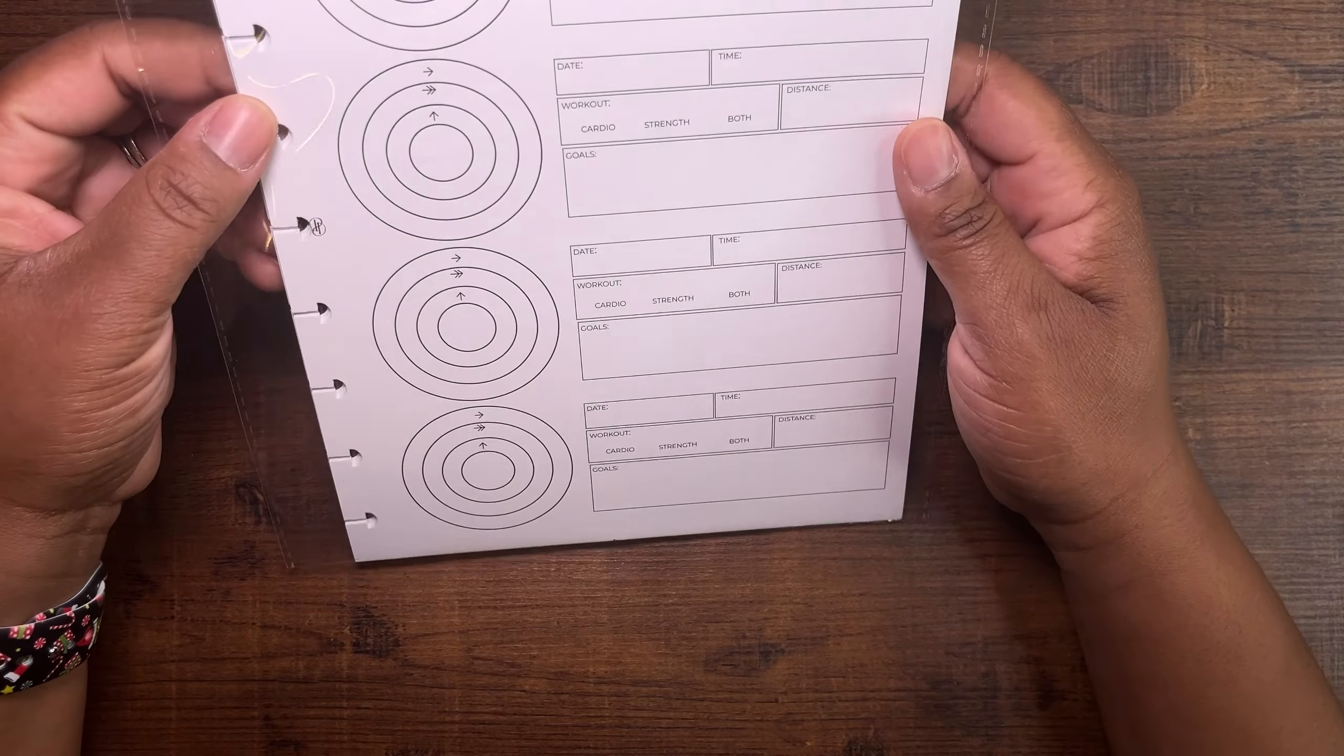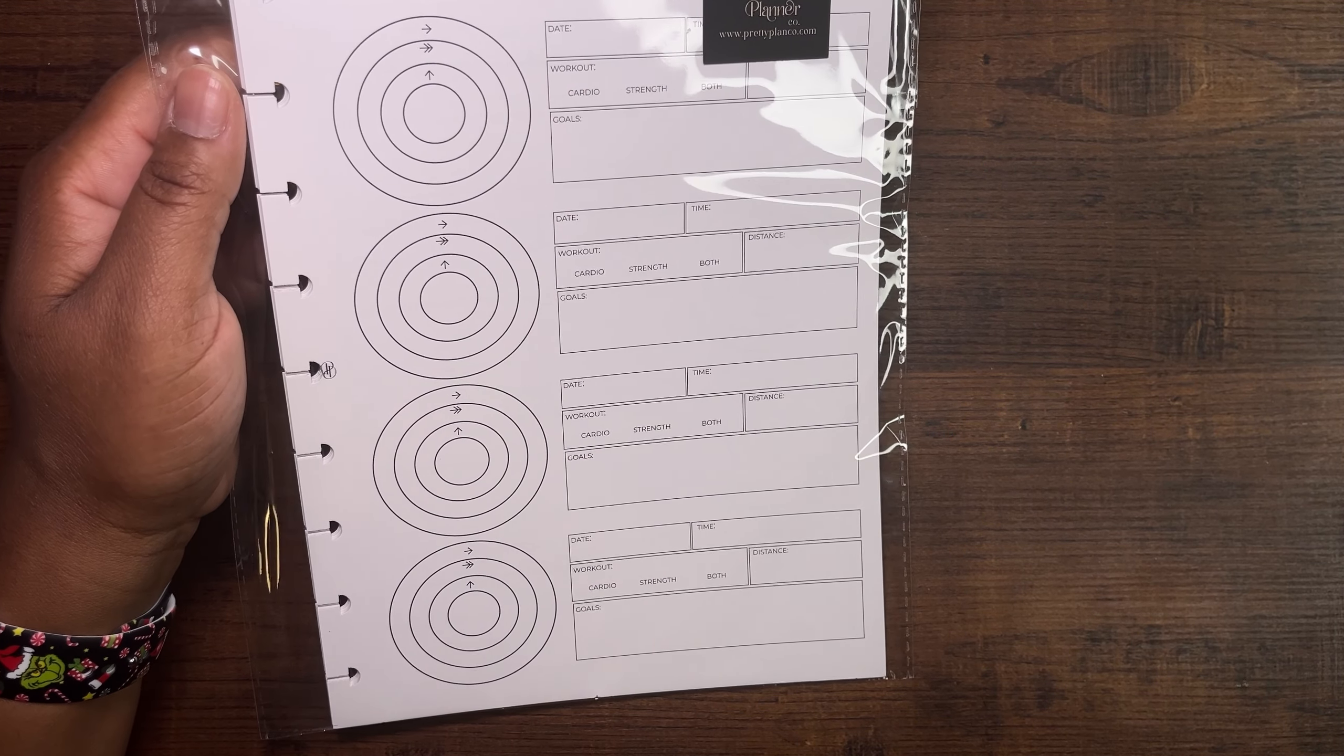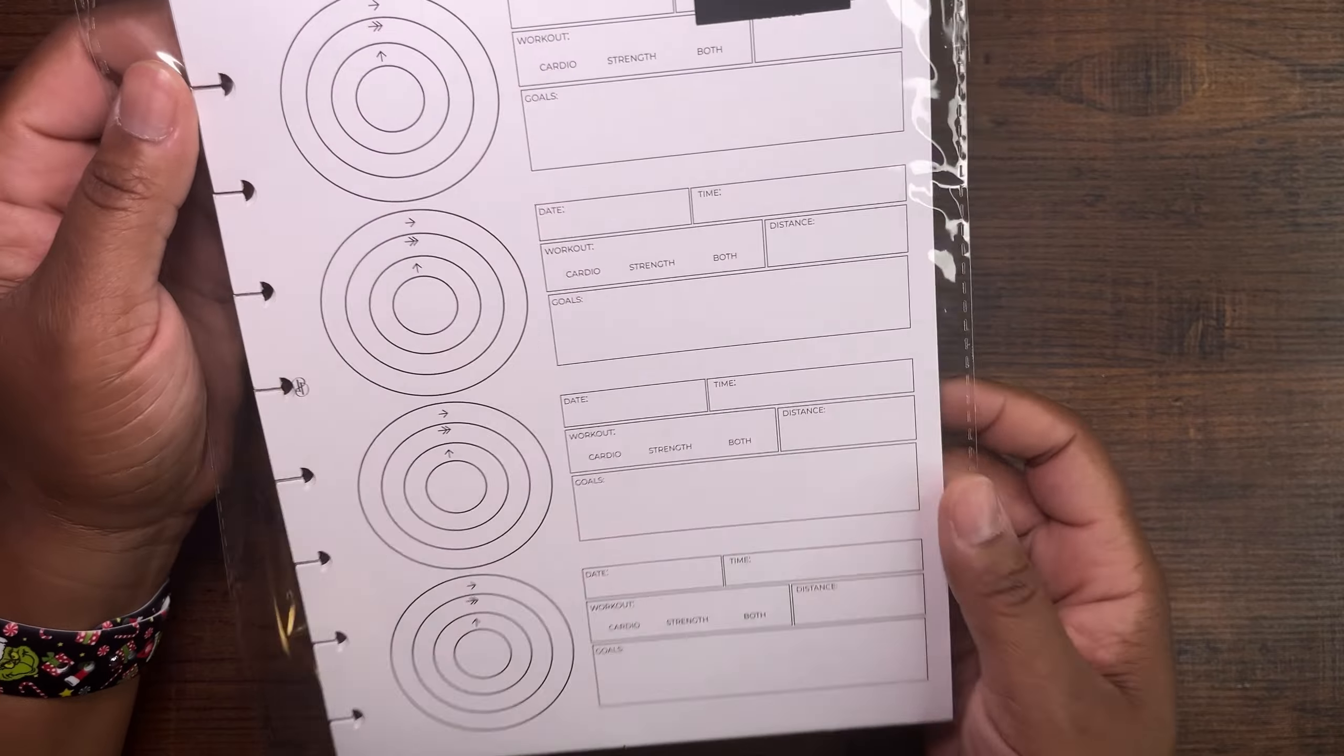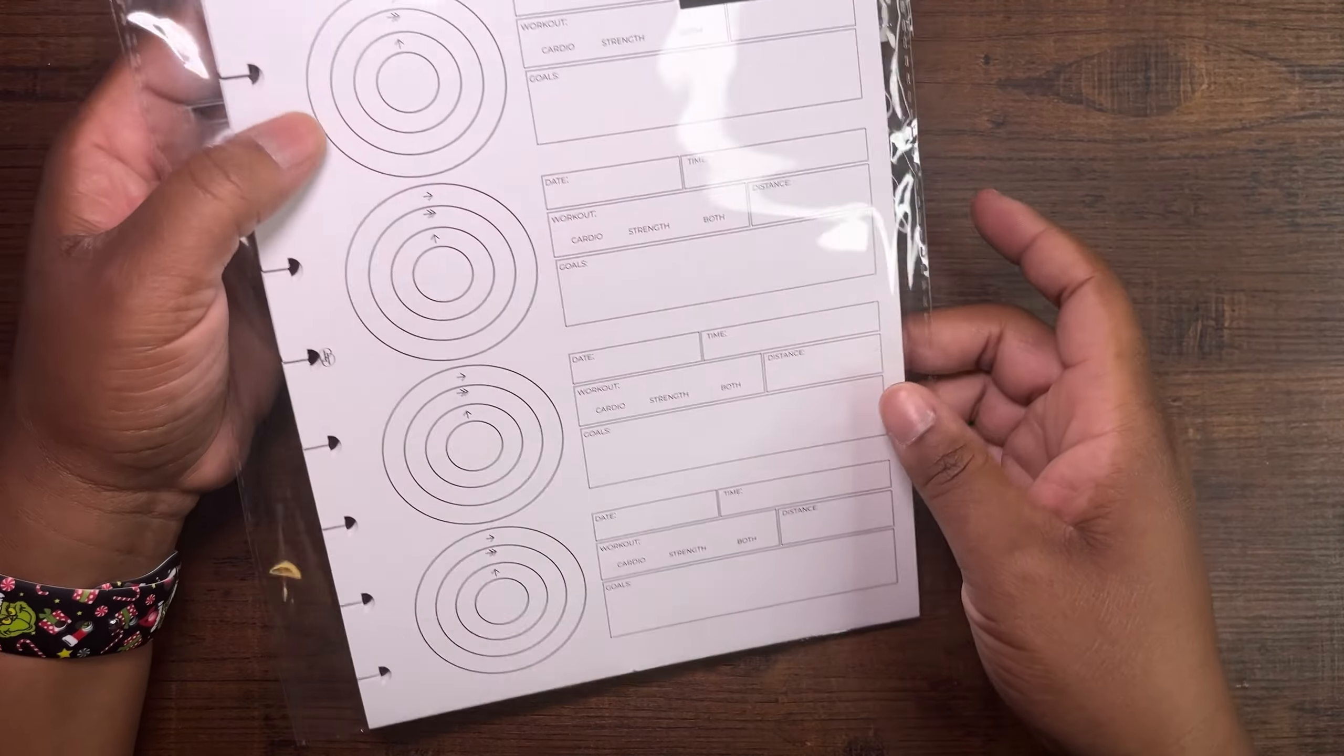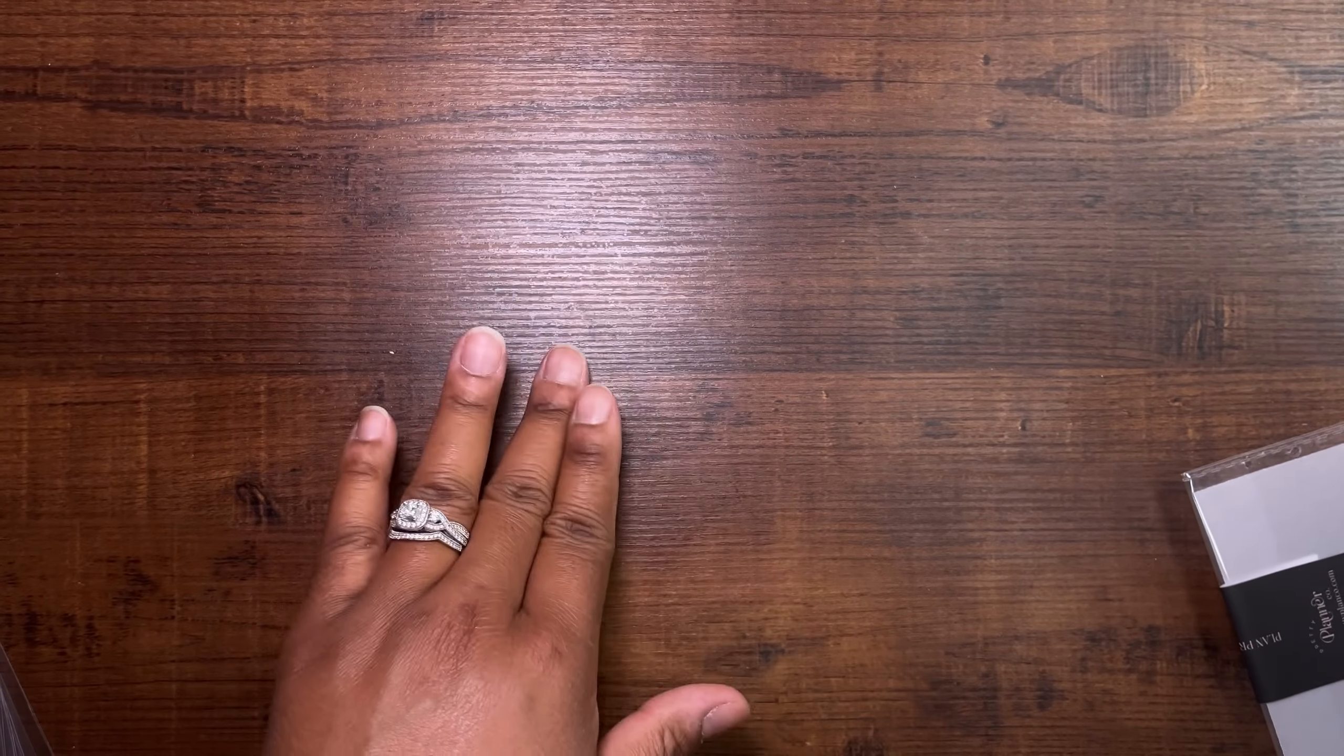Then I also got these activity trackers. I have them in the Mini HP size, but I really wanted them a little bit bigger. Lately I have been working really hard to close my rings, so I love that she created these. They are front and back and you get like four days worth on a sheet, so it's a really good deal.